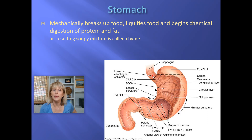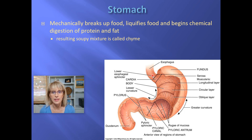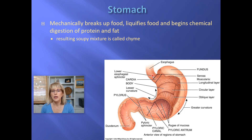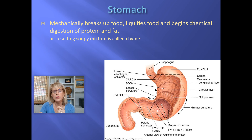The stomach continues to mechanically break up food — that's why when your little brother eats his hamburger in three big bites without chewing, it'll still be okay because his stomach will continue to mechanically break it down. The stomach also mixes whatever you swallowed with acid and enzymes, creating something like a cream of mushroom soup consistency. That mixture then gets squirted into the duodenum — the first part of the small intestine — in tiny little bits at a time.